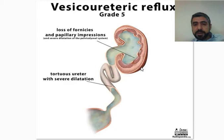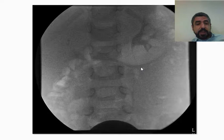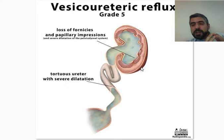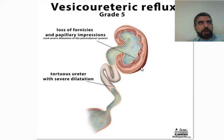How do we identify these grades? By using voiding cystography — or voiding cystourethrography. What's really important here is the voiding cystography, because the urethra is not our primary concern. Our primary concern is the cystography and the ureter — ureterography to some extent.